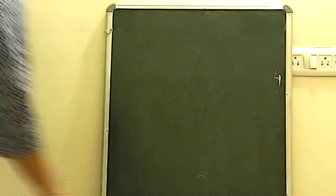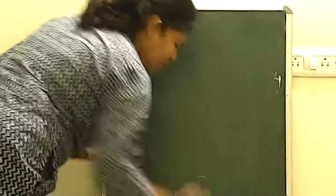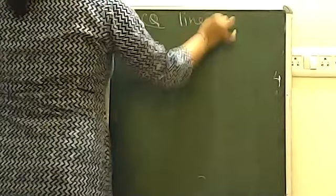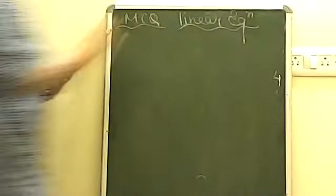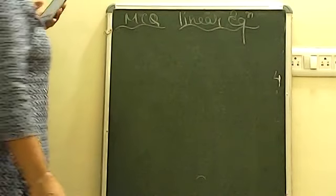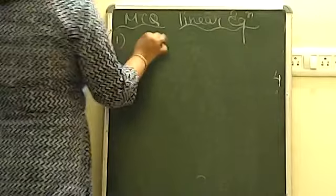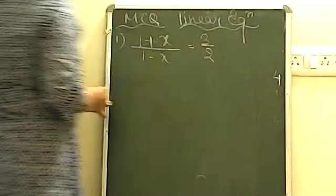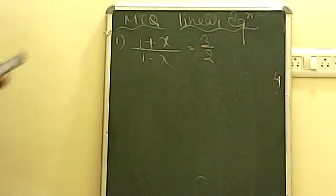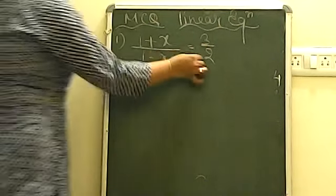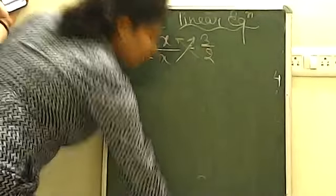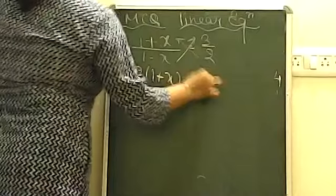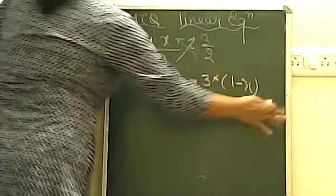Let us start the MCQ questions. Question number one is an MCQ from linear equations. The first question states: when you solve (1+x)/(1-x) = 3/2, what do you get? Both sides are in fraction form, so we can use cross multiplication. Doing cross multiplication gives us 2 multiplied by (1+x) on one side and 3 multiplied by (1-x) on the other side.